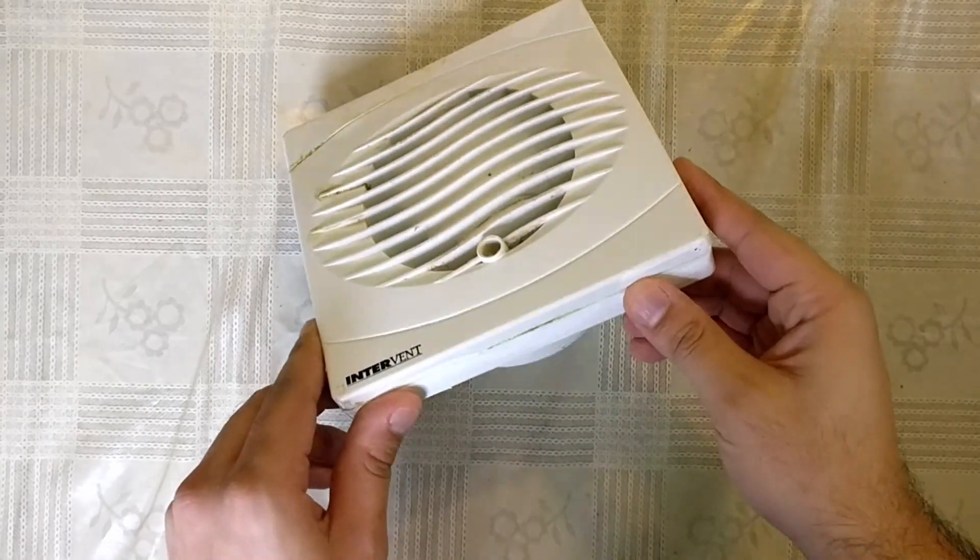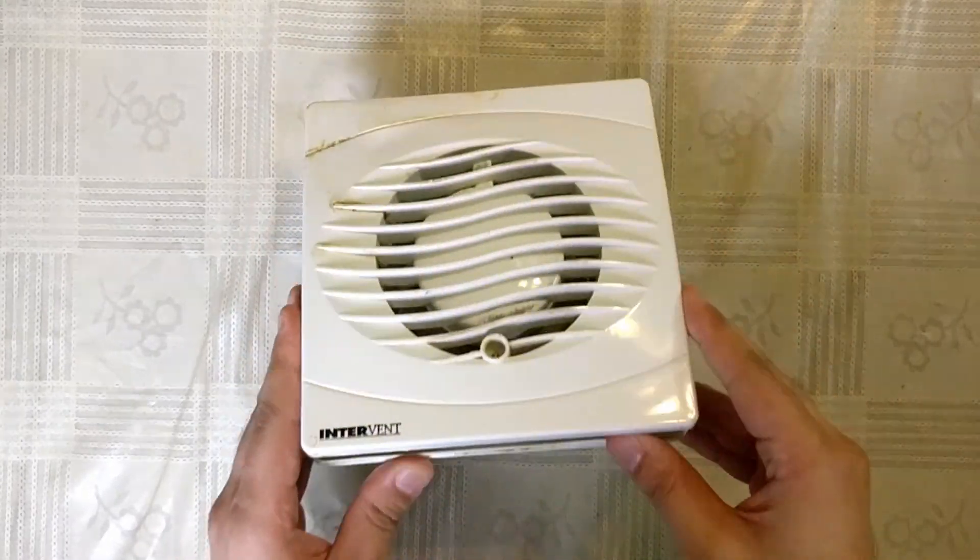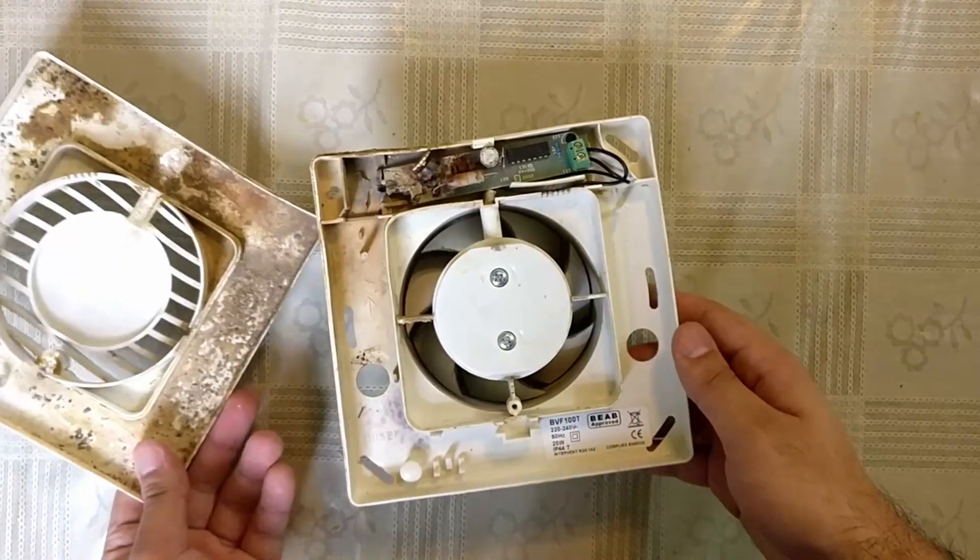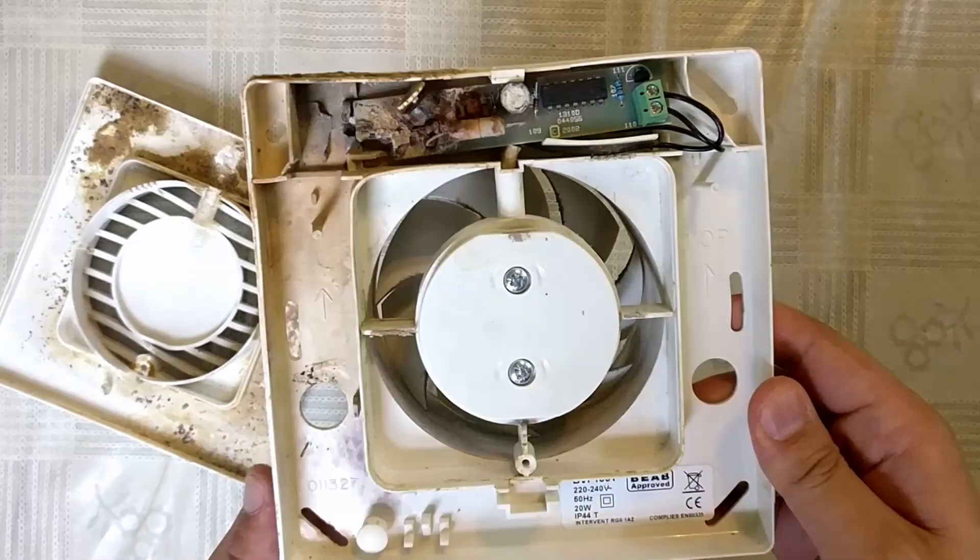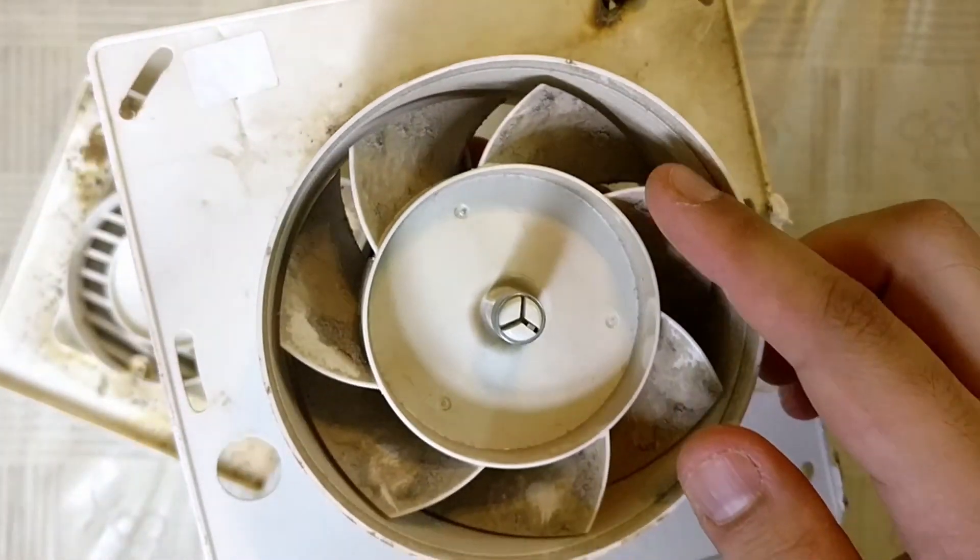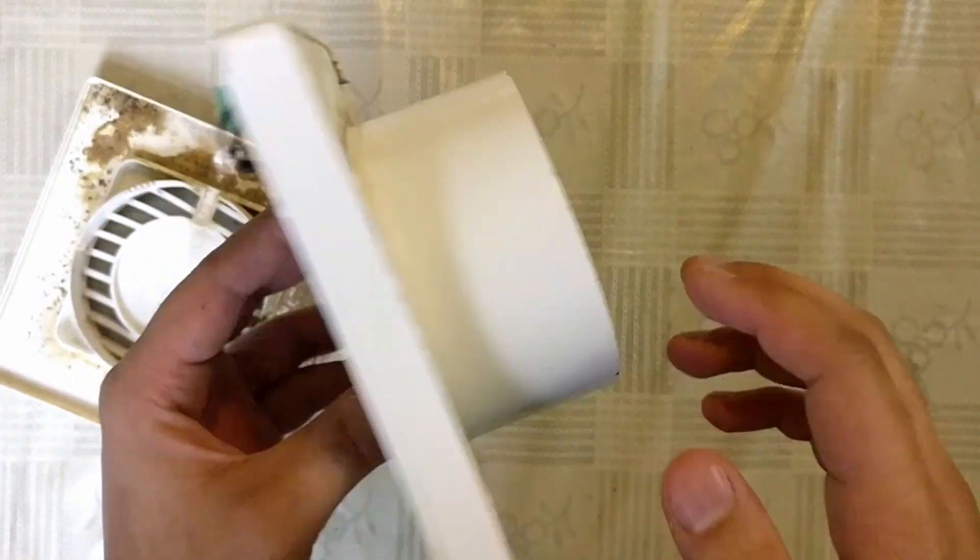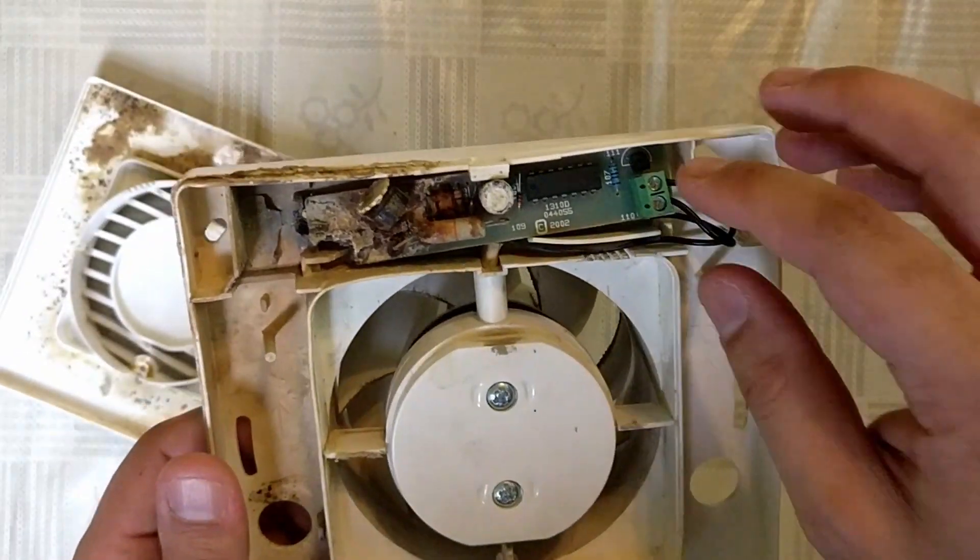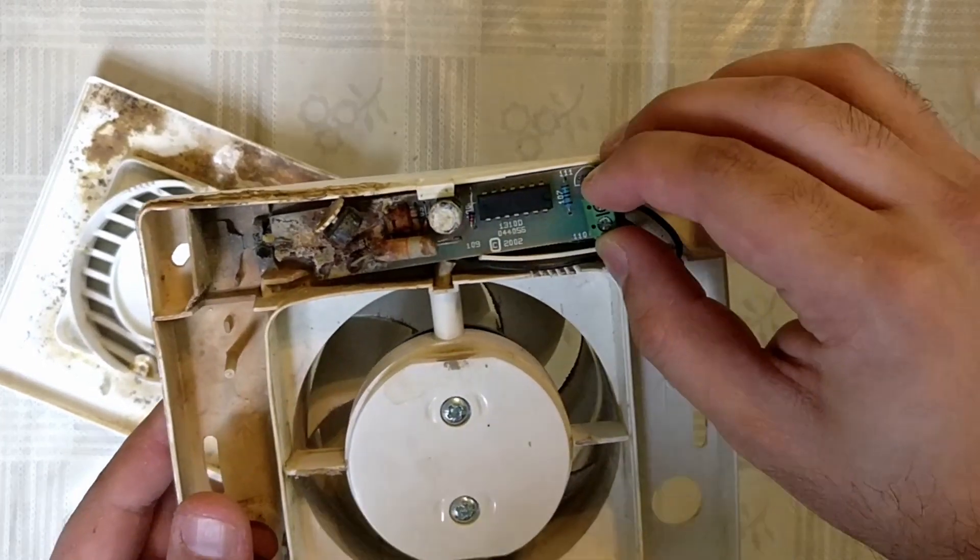Here is a typical mains powered bathroom extractor fan. Taking the front cover off reveals a very simple design. The fan made of blades connected to a motor and the remains of what was a small circuit board. There doesn't seem to be much going on with the fan portion so let's take a closer look at the circuit board.